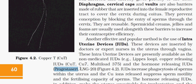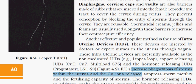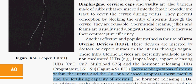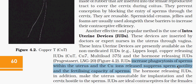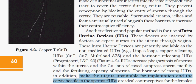The basic function of IUDs is to increase phagocytosis, that is, killing of sperm within the uterus. Copper-releasing IUDs suppress sperm motility and fertilizing capacity. Hormone-releasing IUDs make the uterus unsuitable for implantation and make the cervix hostile to sperm. IUDs are widely used in India.